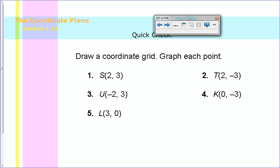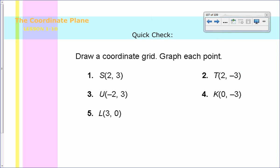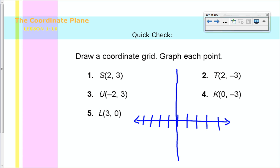Final thing — our quick check, and then you're all done. It says draw a coordinate grid and then graph each point. This is a good example because we aren't always given a coordinate plane — we sometimes have to draw it. So we draw our horizontal axis and then a vertical one. Do your best to make it as even as possible — just try to make sure all the dashes are at about the same width. Now we have to graph, and I'm going to leave these five up to you. Go ahead and do the five, and when you're all done come back and check your answer. Go ahead and pause me now.